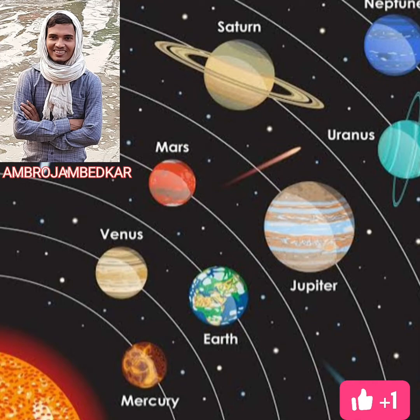The size of the solar system has been estimated to be about 10 to the power 5 astronomical units (AU). The solar system is dominated by the sun, which accounts for almost 99.9 percent of the matter in the whole solar system. The sun is also the source of all the energy in the solar system.